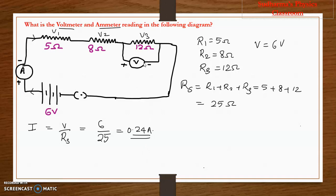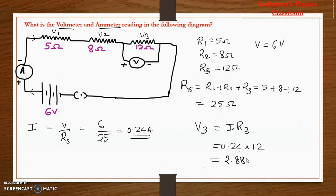Now, what is the voltmeter reading? The voltmeter is connected across the 12 ohm resistor, so a potential V3 is dropped across that 12 ohms. V3 = I × R3. I is 0.24 and R3 is 12, so 0.24 × 12 = 2.88 volt. This is the potential difference across the 12 ohm resistor. For today's homework, calculate V1 and V2 using the same method: V1 = I × R1 and V2 = I × R2. Drop your answers in the comment box.